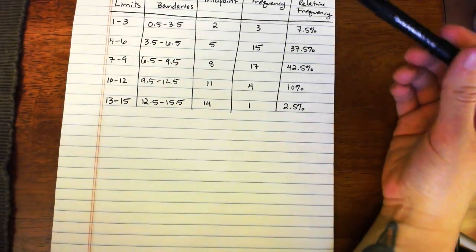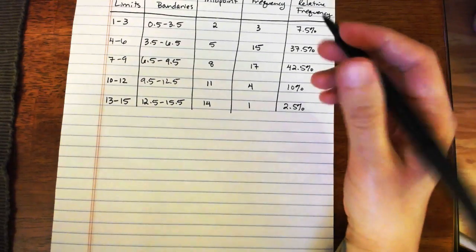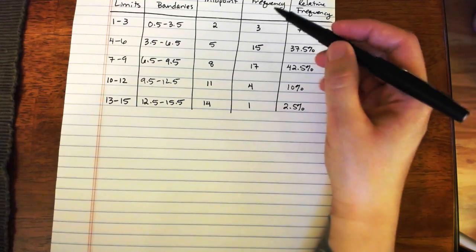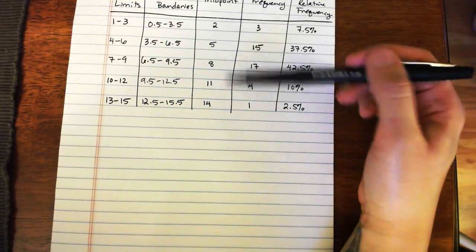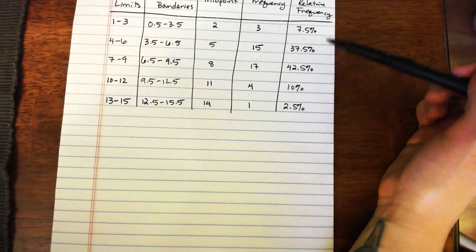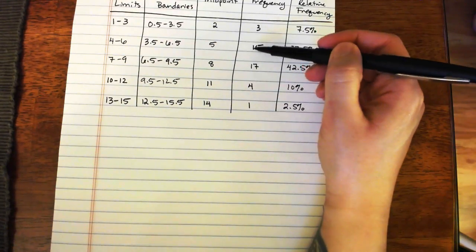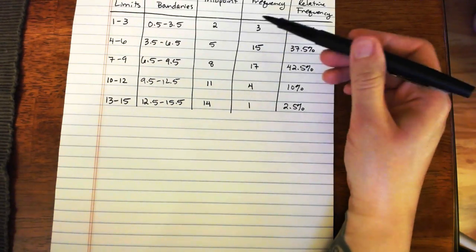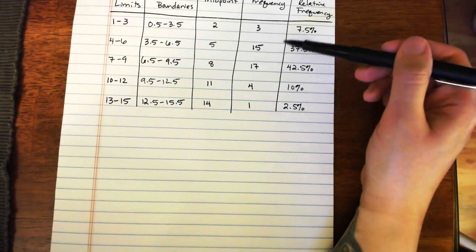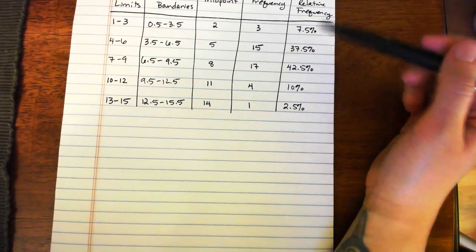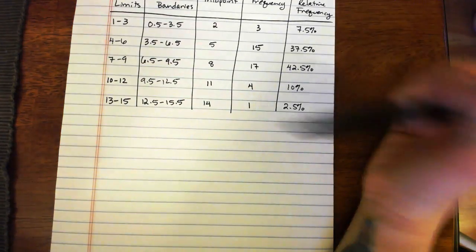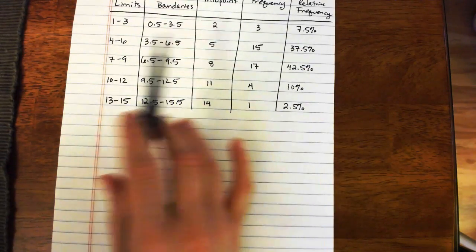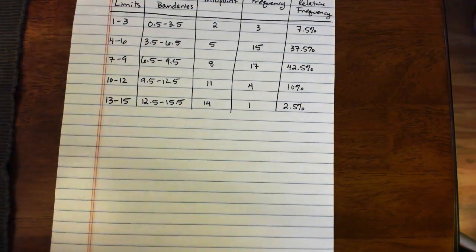One thing I also didn't mention in the last video but that tends to be really handy, if you know how many pieces of data you were starting with, in this case we were starting with 40 individual pieces of data, one of the things that you can do to double check to make sure you've counted everything properly and computed your relative frequencies properly is that all of your frequencies when you total them should add up to how many pieces of data there are.